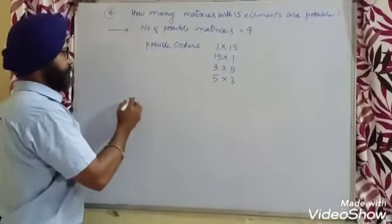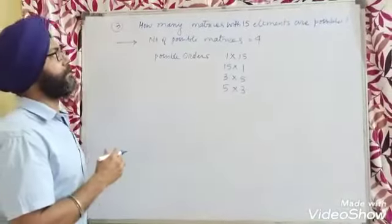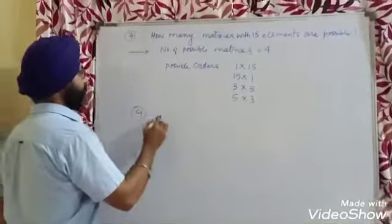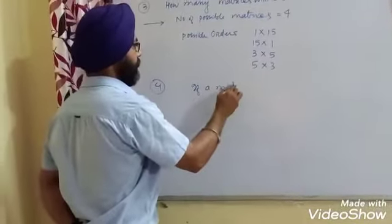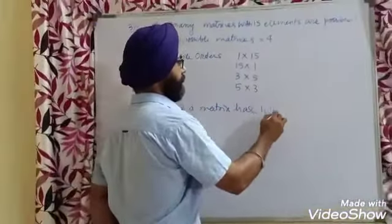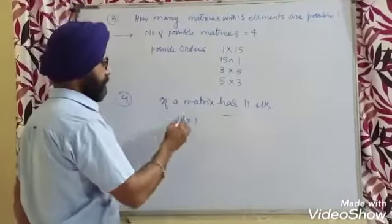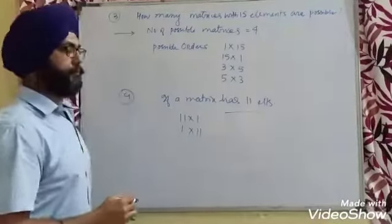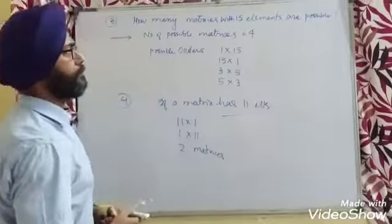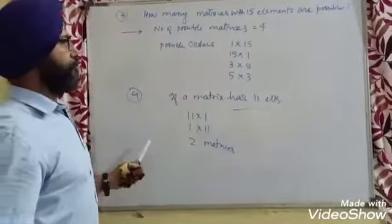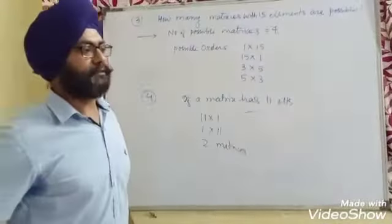If a matrix has a prime number of elements — for example, 11 elements — then since 11 is prime, only 2 matrices are possible: orders 11×1 and 1×11. These are some basic things related to matrices and their representation. Further, we will discuss the types of matrices in the next part.